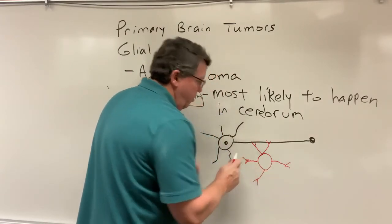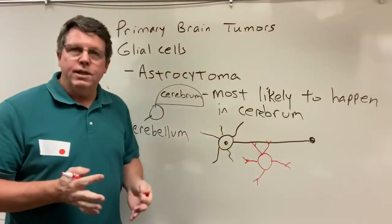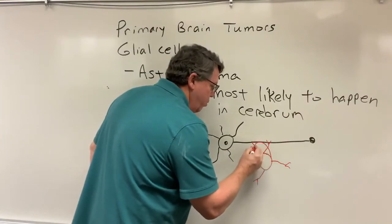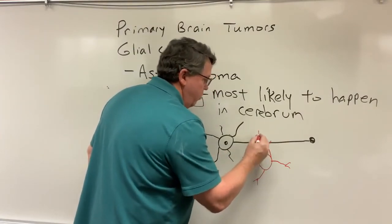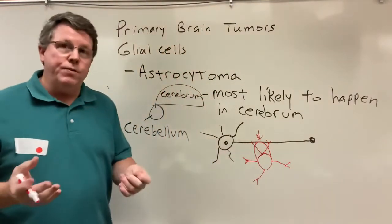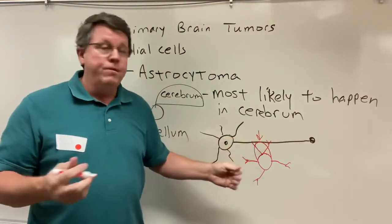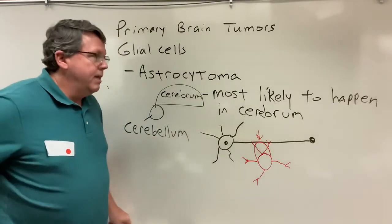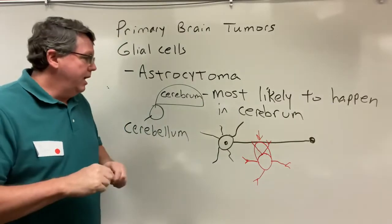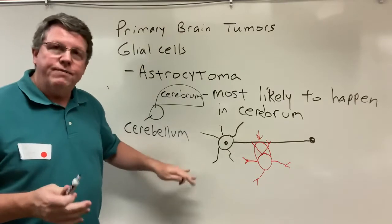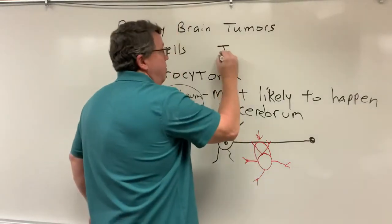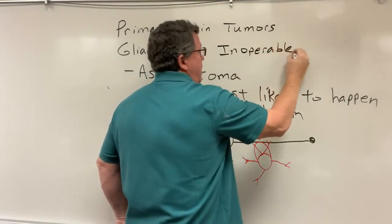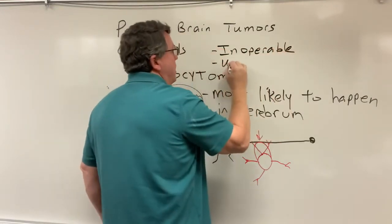If we start to get a tumor — and remember, a tumor is a growth — it will actually start to grow and put pressure on these nerves. When it does that, two things can happen: the nerves can just die, or because of the pressure, the nerve doesn't function properly. The bad thing about these is that they're inoperable, because they're holding nerves in place. They are usually always fatal.